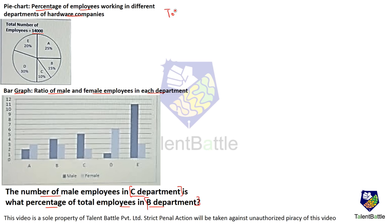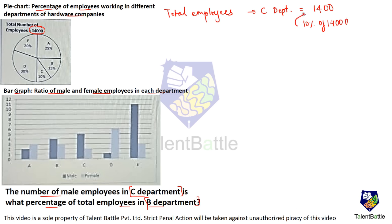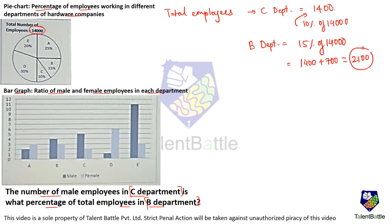First, let's find the total number of employees in C and B departments. Total employees are 14,000. Total employees in C department is 10% of 14,000, which is 1,400. Total employees in B department is 15% of 14,000. 10% is 1,400 and 5% is 700, so 15% comes out to be 1,400 + 700 = 2,100.